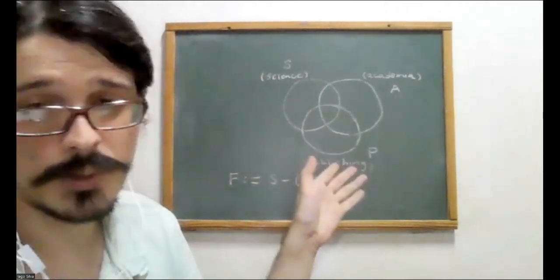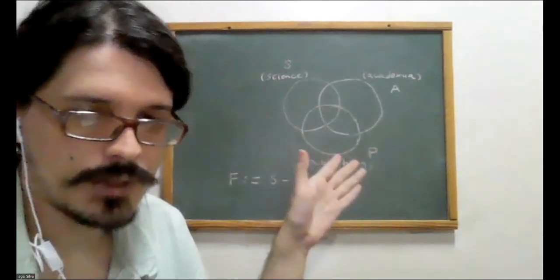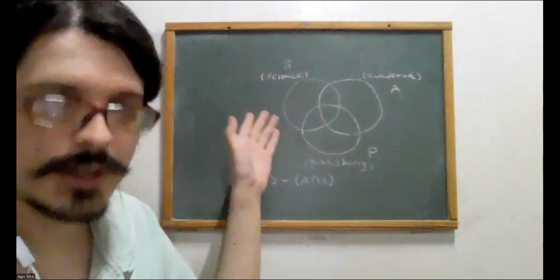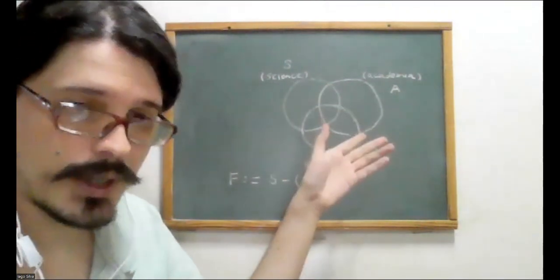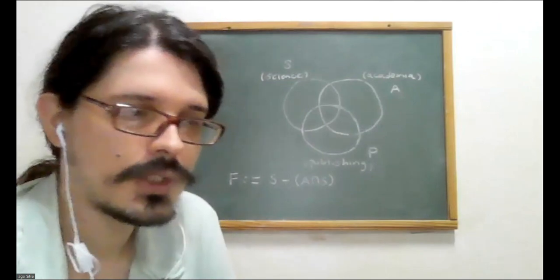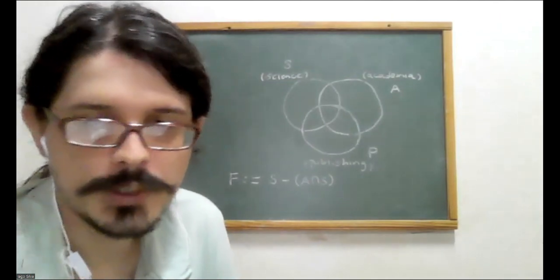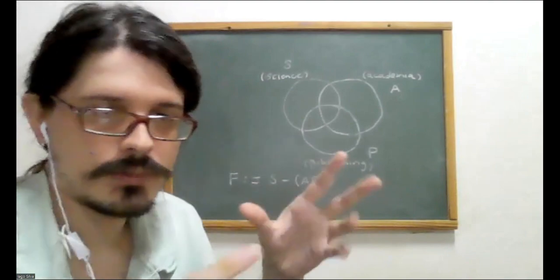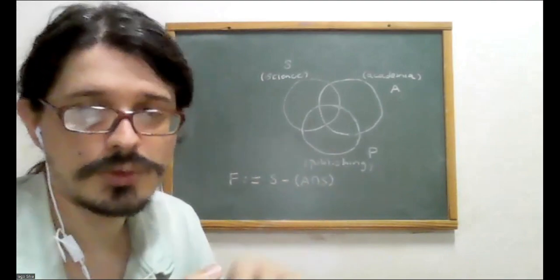I would like to submit to you that there's a little more to it than that. And to understand the point that I want to make here, to understand the underlying thesis, you've got to understand this diagram over here, this Venn diagram that I wrote. We've got basically three entities that are interconnected: science (letter S), academia (letter A), and the publishing industry, represented by P.